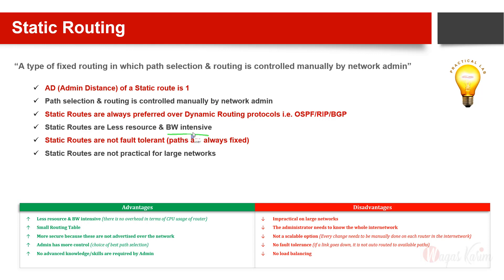Static routes are less resource and bandwidth intensive, which means if we want to configure a small network or a network with small routing devices or lower-end router models, static routing is best because we don't need much overhead. For example, if we have only two or three routers in a network, it's not practical to use BGP, OSPF, or other routing protocols, so static routing is our best choice.